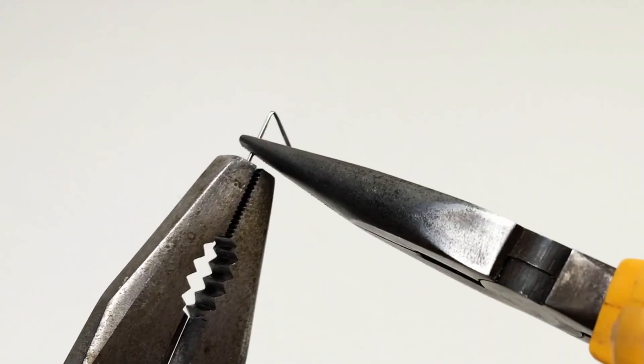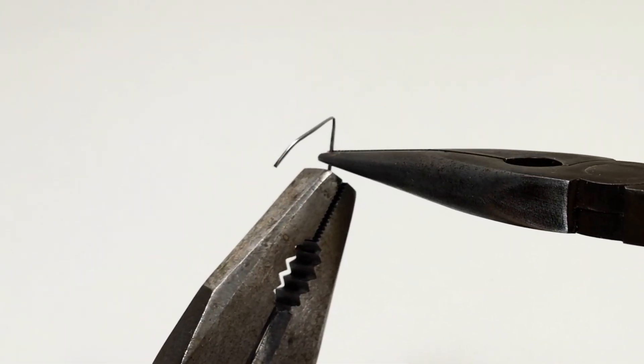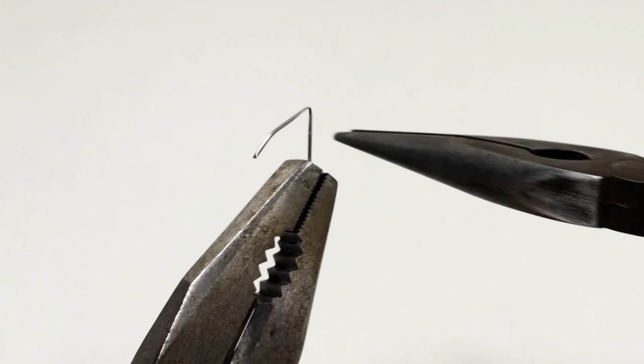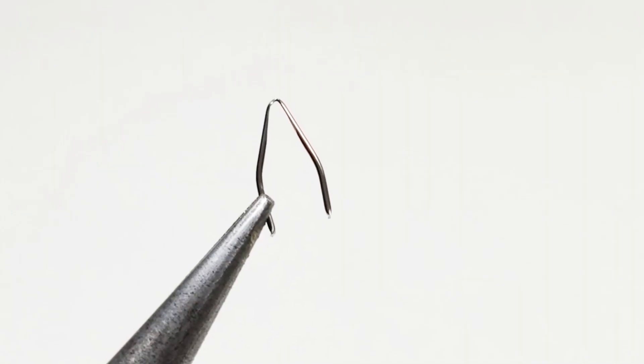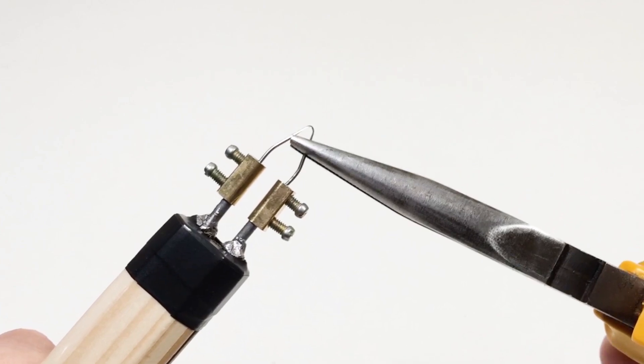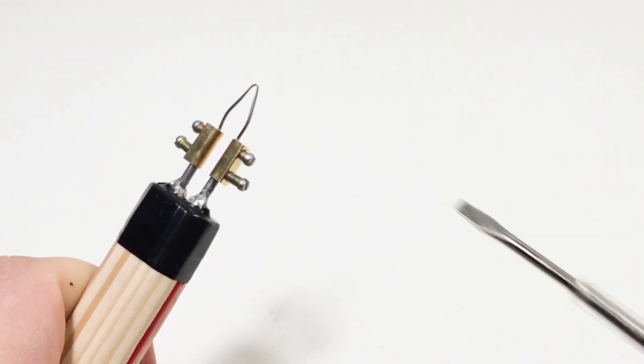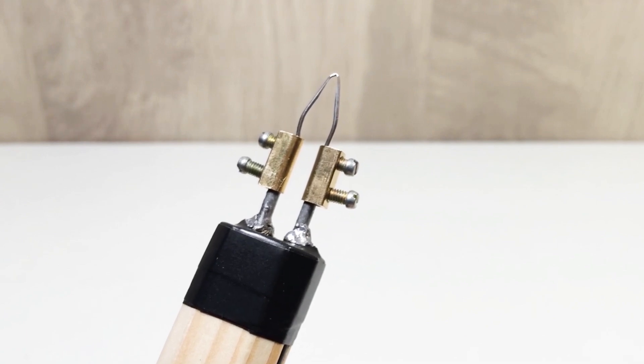Why a syringe needle? Because it's made of medical grade stainless steel. That material is strong, durable, and heat resistant. Plus, stainless steel has higher electrical resistance and as you know, the higher the resistance, the more heat it generates. We install the needle into the terminals and our DIY wood burning tool is ready.